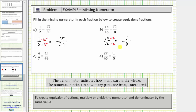For c, we're given the fraction four-sevenths. We want an equivalent fraction with a denominator of forty-nine. Looking at the denominators, seven times seven is equal to forty-nine.